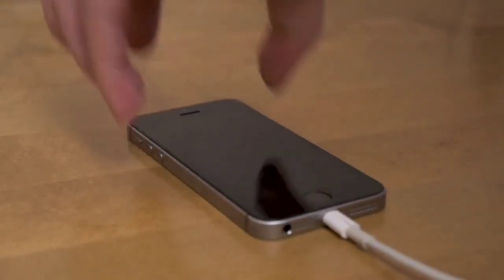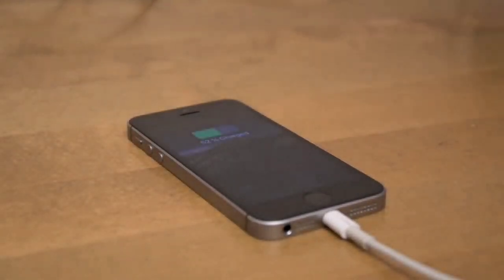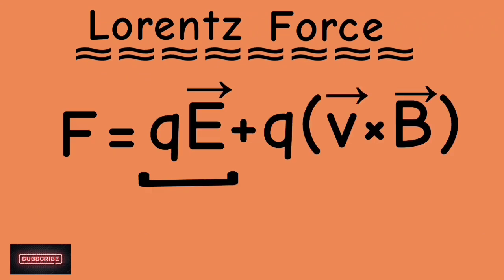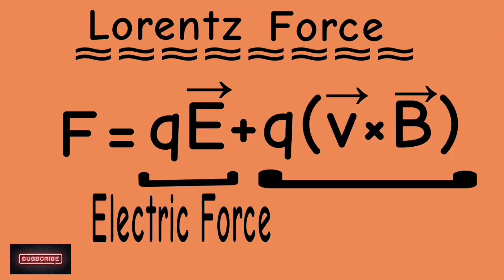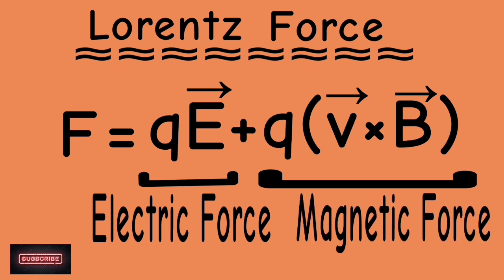So when electrons zoom through a wire to charge your computer or phone or turn on your TV, for example, the wire becomes magnetic. Now the Lorentz force can be expressed by the following formula. The first part of this formula represents the electric force, and the second part represents the magnetic force.